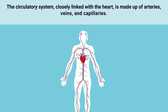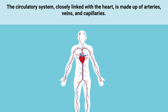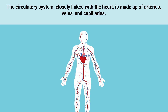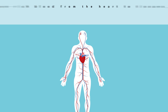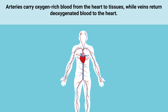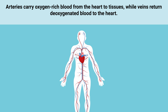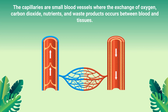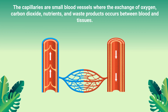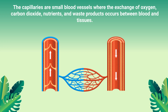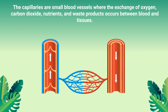The circulatory system, closely linked with the heart, is made up of arteries, veins, and capillaries. Arteries carry oxygen-rich blood from the heart to tissues, while veins return deoxygenated blood to the heart. The capillaries are small blood vessels where the exchange of oxygen, carbon dioxide, nutrients, and waste products occurs between blood and tissues.